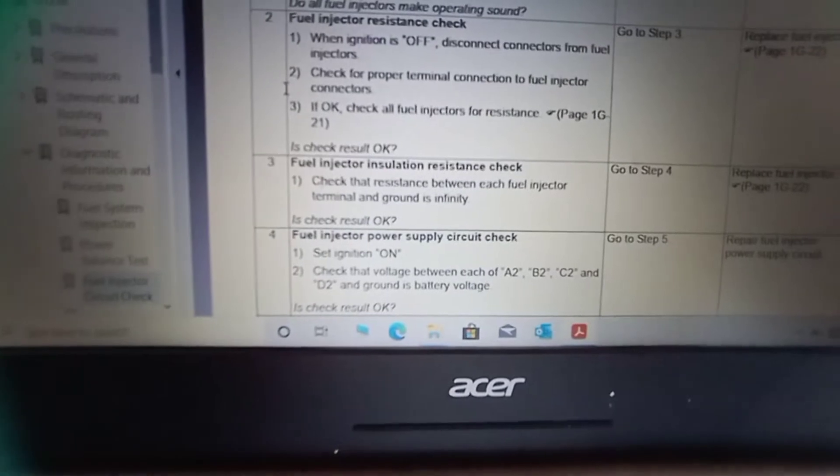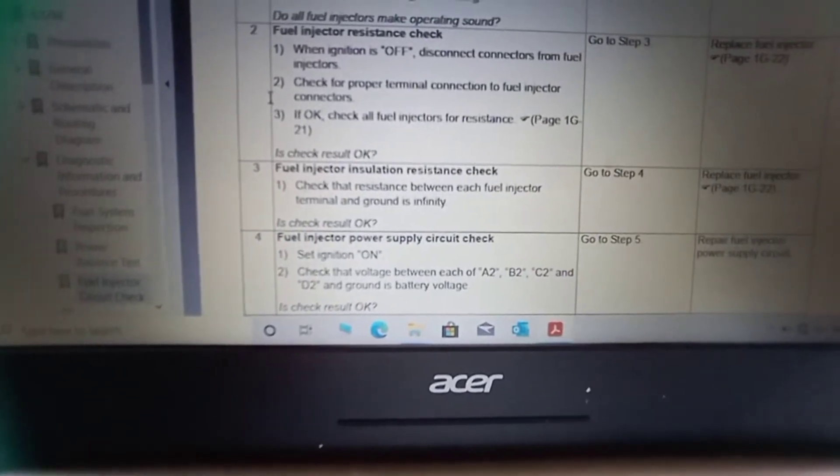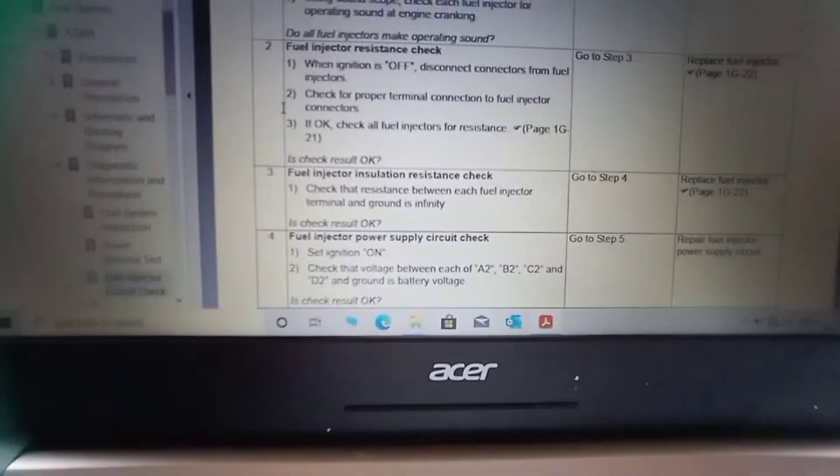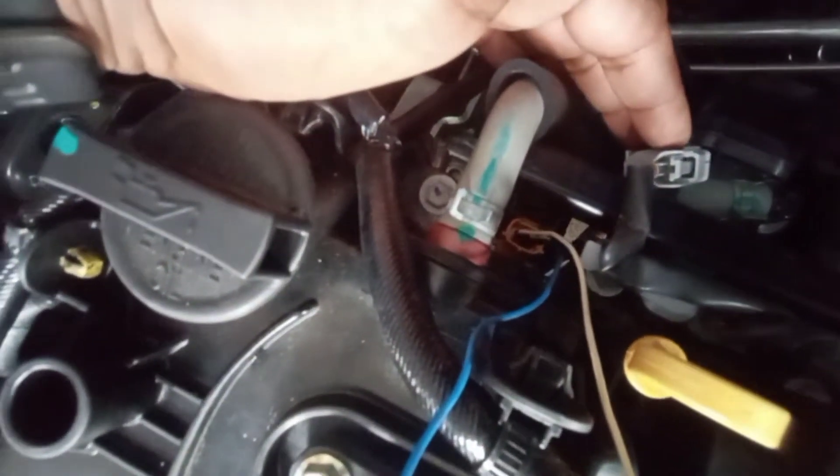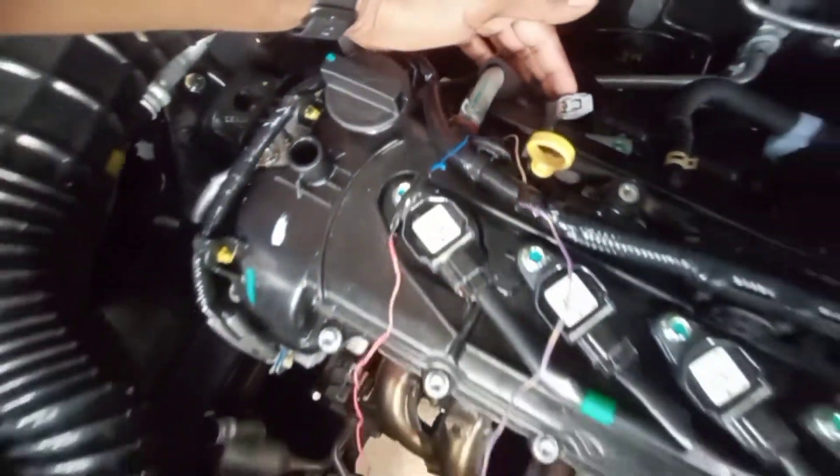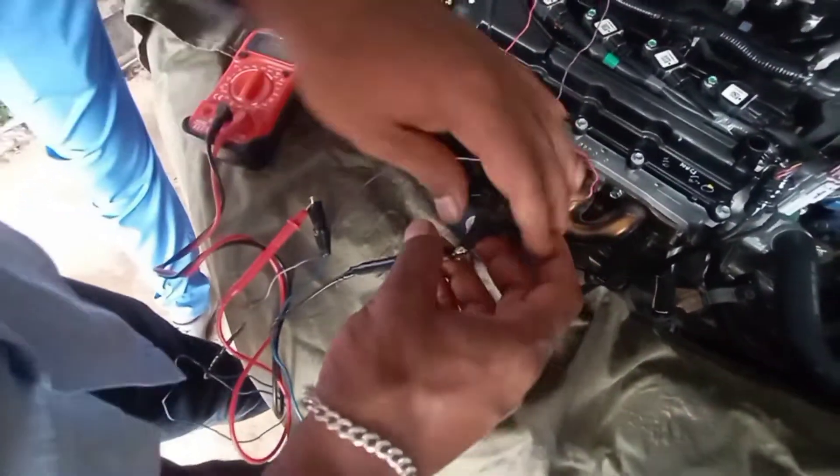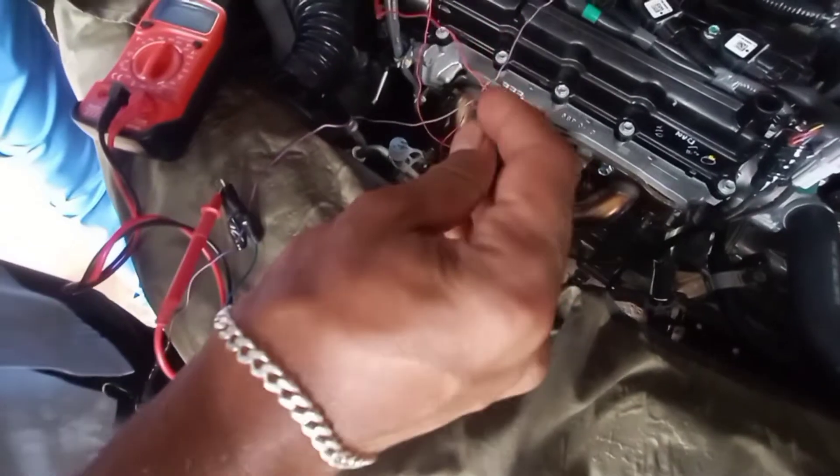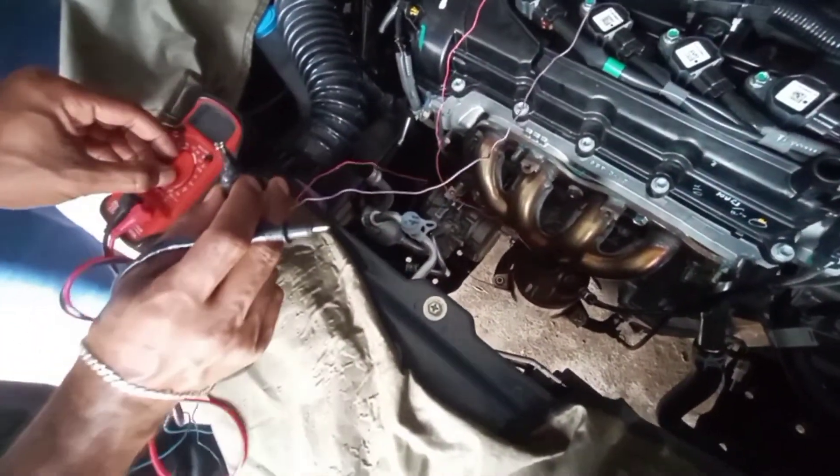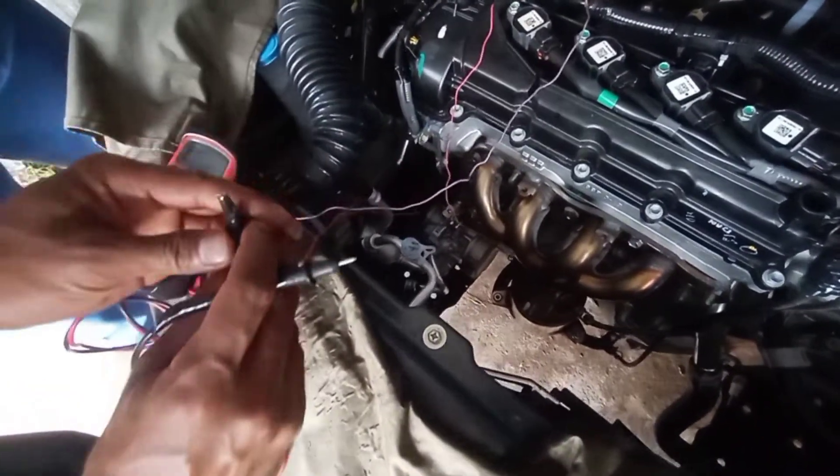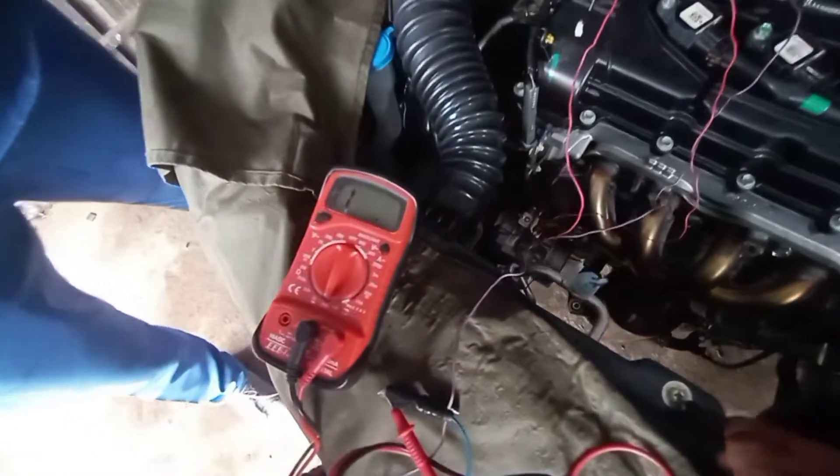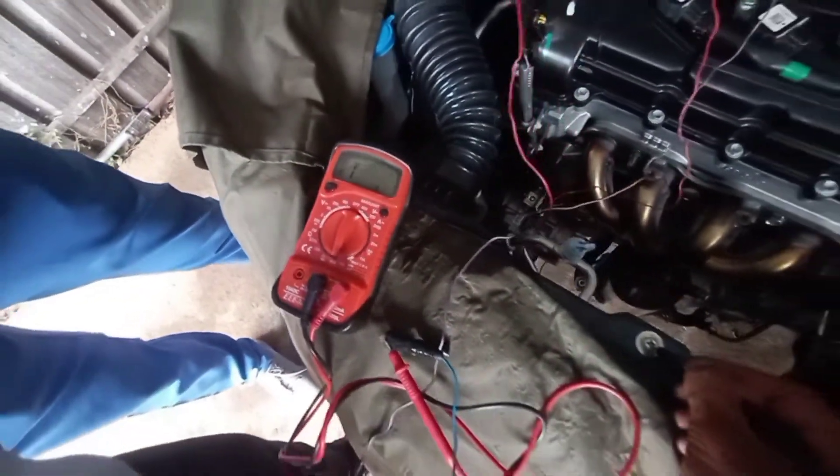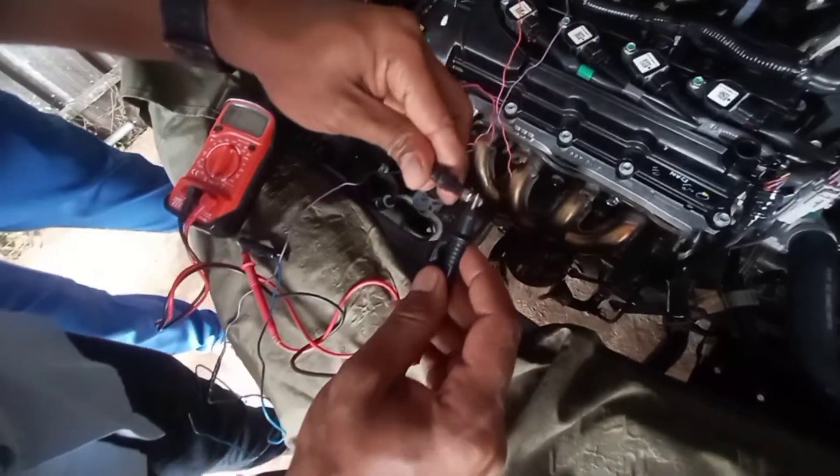Next fuel injector insulation resistance check. We are already connected to the number 1 injector terminal. Disconnect the multimeter probe and check with body resistance. With infinity, check with other terminal.